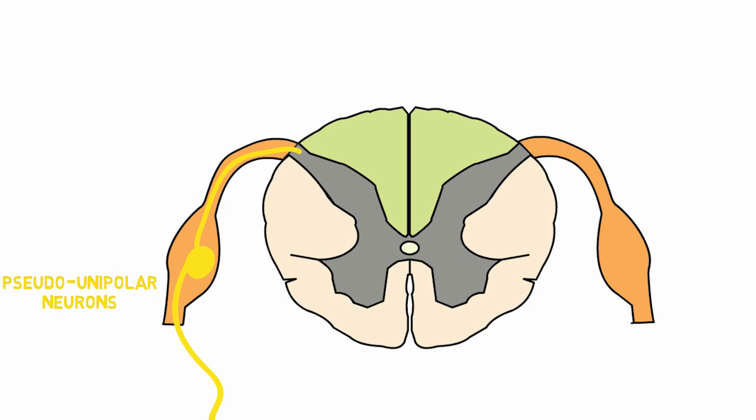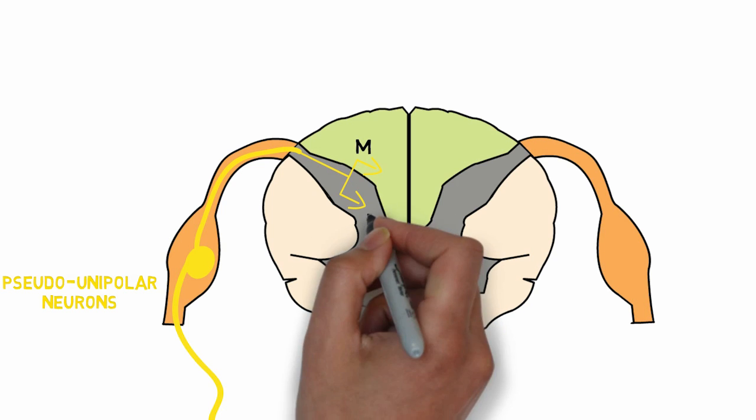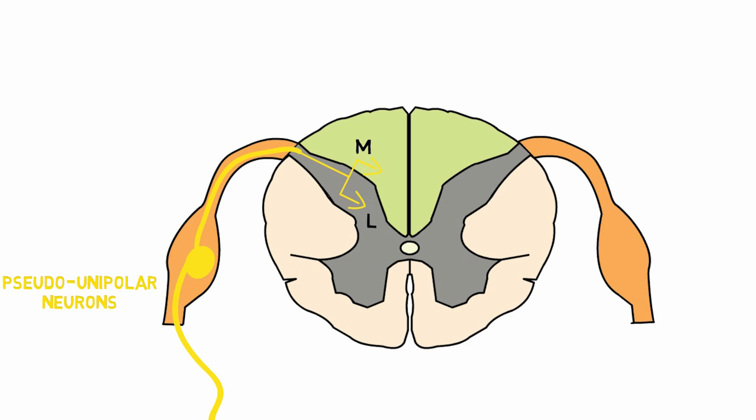The central process when enters the spinal cord divides immediately into a medial branch and a lateral branch. The medial branch then ascends upwards into the spinal cord as the dorsal column pathway.